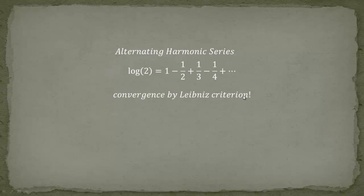The convergence of the alternating harmonic series can be shown using the Leibniz criterion, which requires three things: the series must be alternating (plus, minus, plus, minus — yes), the magnitudes must be monotonically decreasing (1/2, 1/3, 1/4 — yes), and the limit of the terms must go to 0 — also satisfied. By these three conditions we confirm that this series is truly convergent.